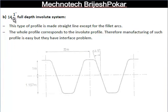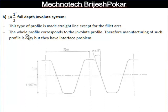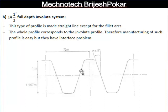The second type is the 14.5 full depth involute system. The difference here is that the entire profile — top and bottom — is a straight line, except for the fillet arc. The whole profile corresponds to the involute profile, which makes manufacturing easier. However, one problem with this system is the interference problem.